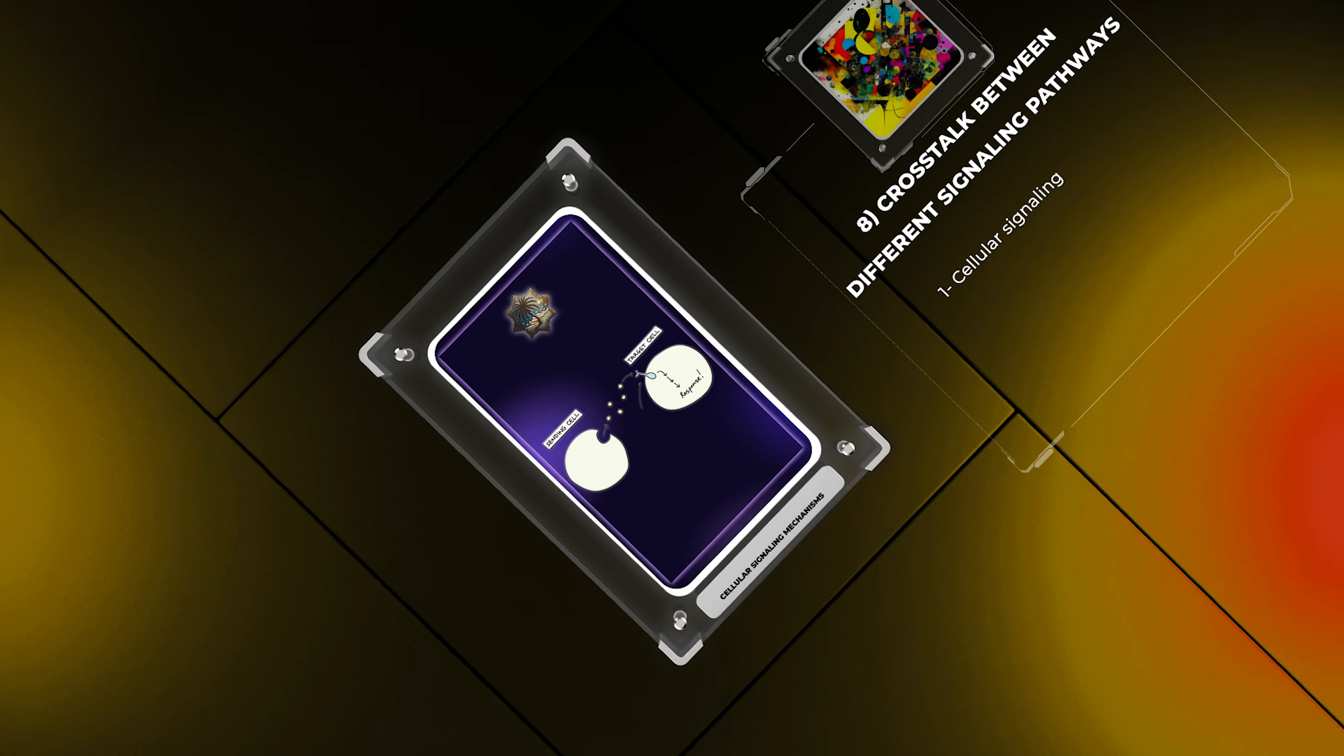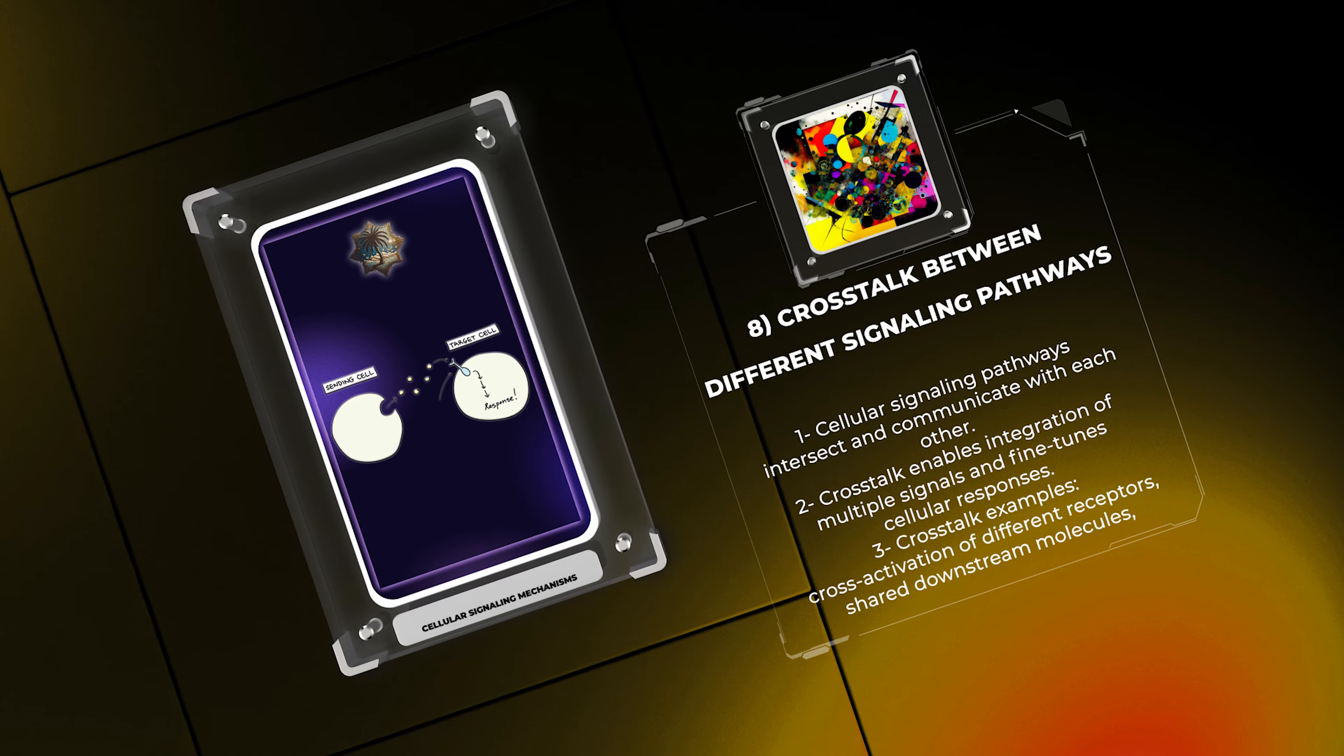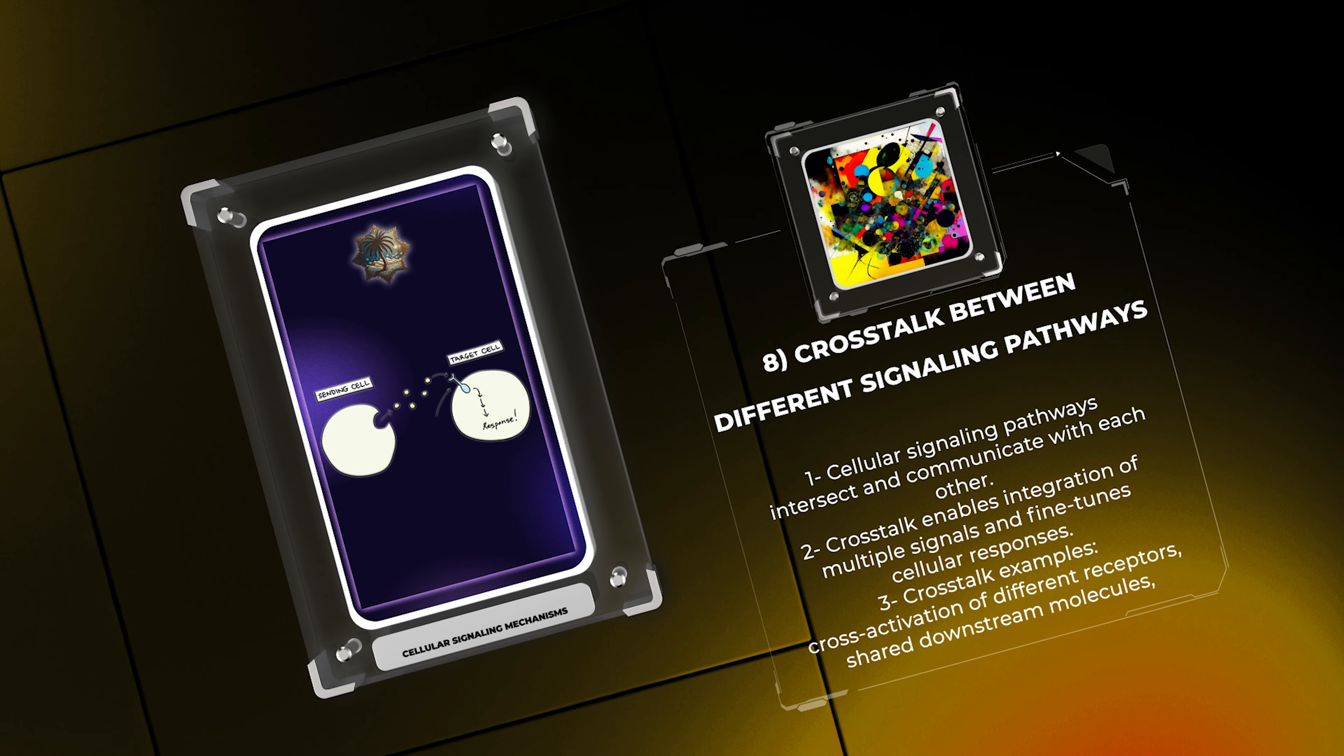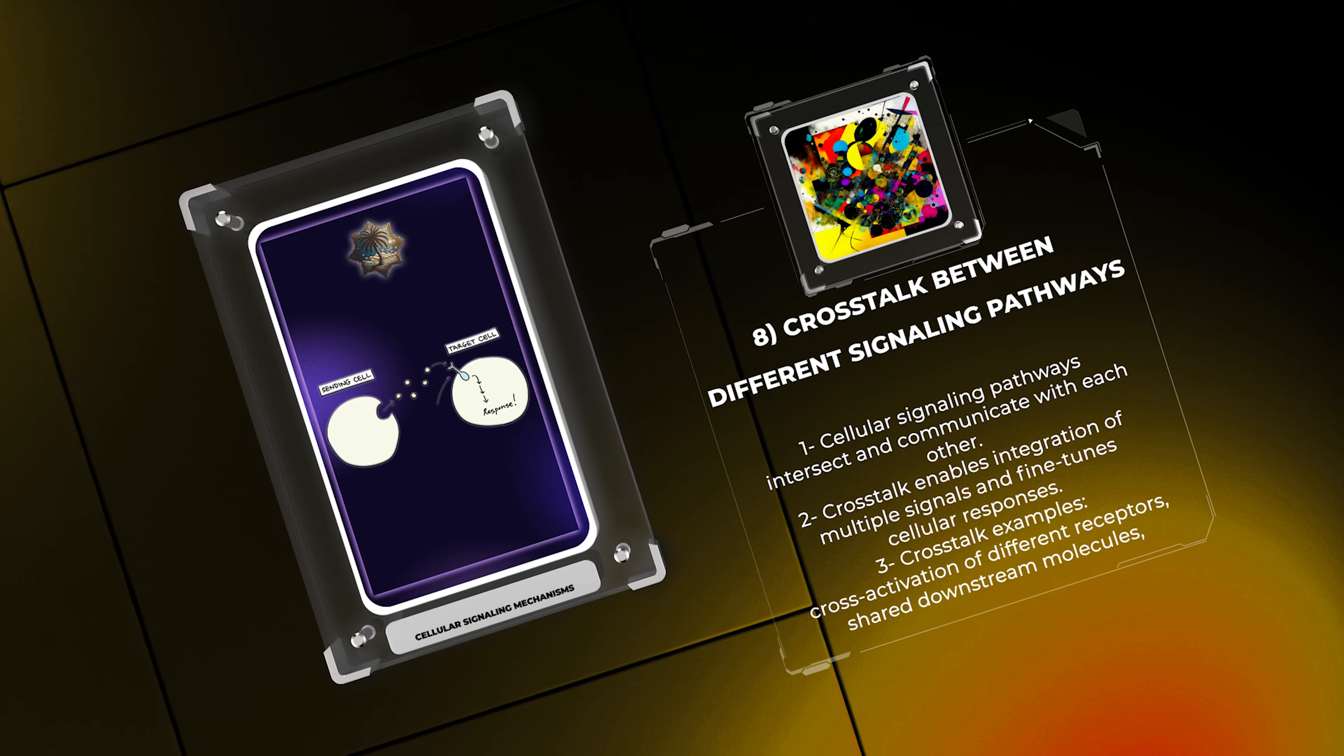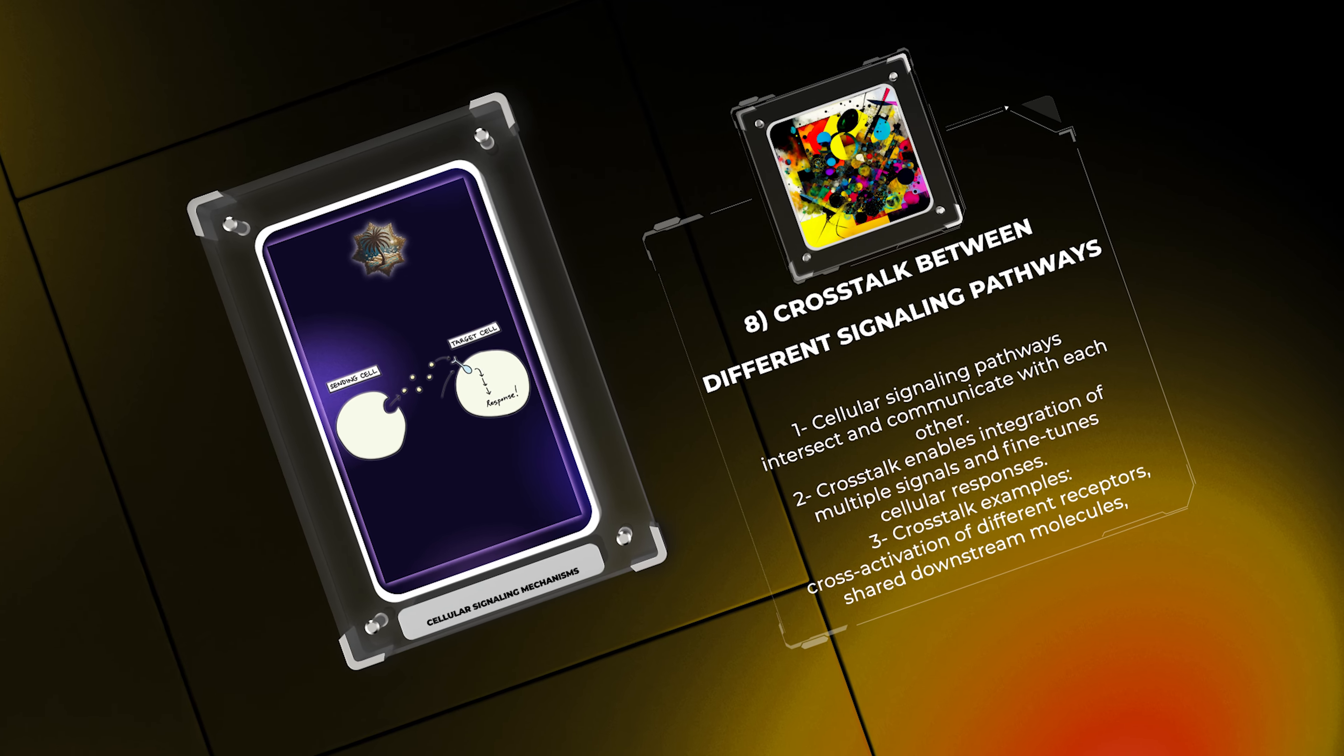Cellular signaling pathways often intersect and communicate with each other, leading to complex crosstalk. This crosstalk enables the integration of multiple signals and fine-tuned cellular responses. Examples of crosstalk include cross-activation of different receptors, shared downstream molecules, and feedback loops that regulate the activity and output of signaling pathways. Understanding crosstalk is crucial for deciphering the complexity of cellular signaling networks.